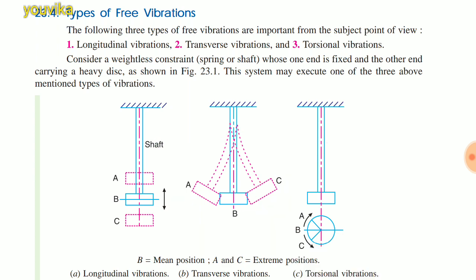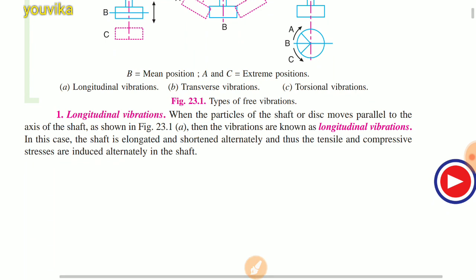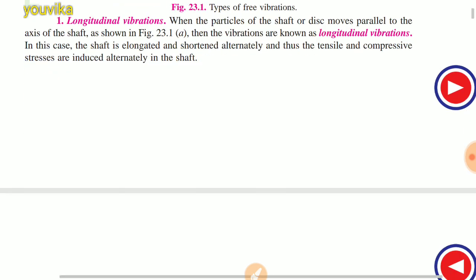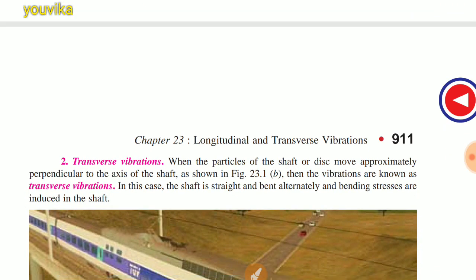Definitions: Longitudinal vibration — when the particles of a shaft or disc move parallel to the axis of the shaft, the vibrations are known as longitudinal vibration. Transverse vibration — when the particles of the shaft or disc move approximately perpendicular to the axis of the shaft, the vibrations are known as transverse vibration.